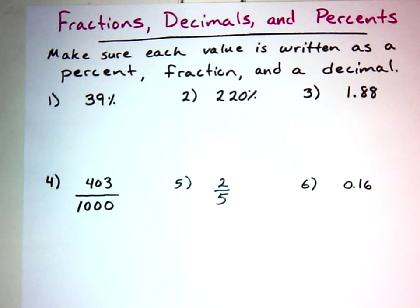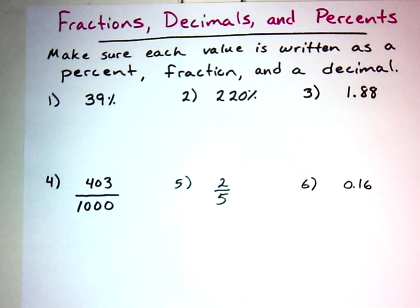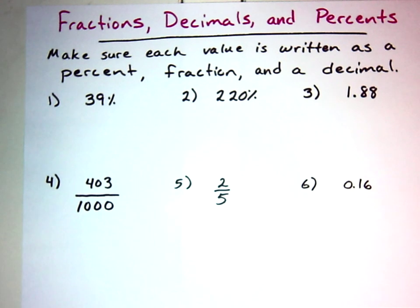I have six problems here. It says make sure each value is written as a percent, fraction, and a decimal. It's already given in one of those forms, and we need to understand how to turn it into the other forms. This is going to come in handy when working with algebraic equations or formulas like exponential growth and decay where we don't want to multiply by percentages.